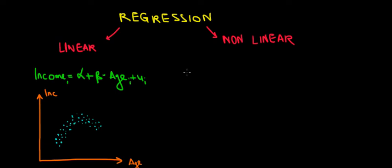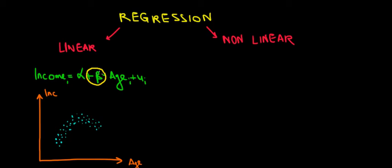Let's work on the concept of linear and nonlinear regression. What does a linear regression mean? Literally, we are having an equation where we have a constant slope. Beta is the slope of our line, meaning that the slope is constant for the entire equation, for the entire line.